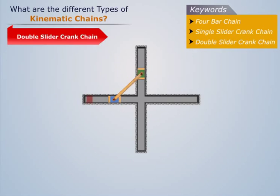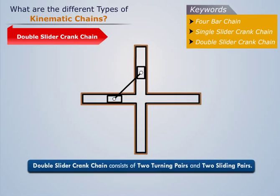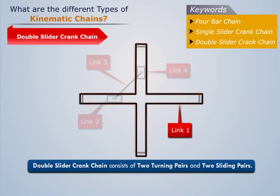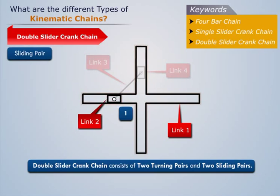A double slider crank chain consists of two turning pairs and two sliding pairs. Consider the chain as shown. Here, link 1 makes a sliding pair with link 2 and link 4.